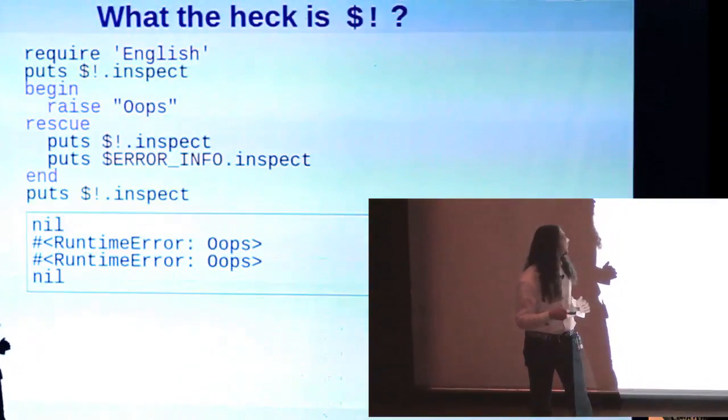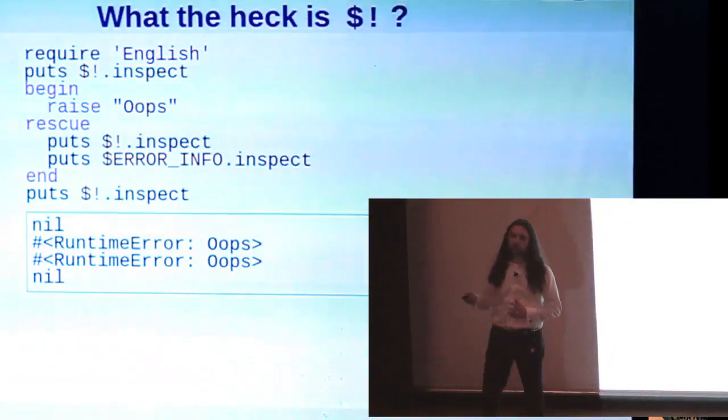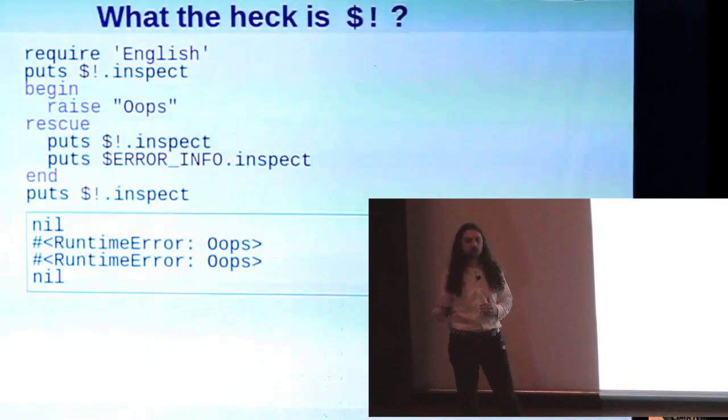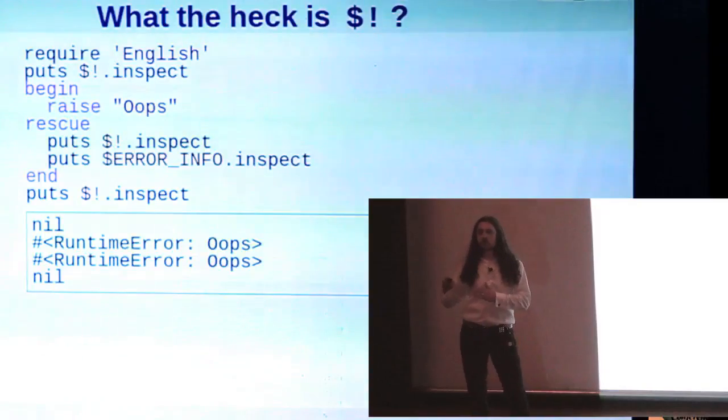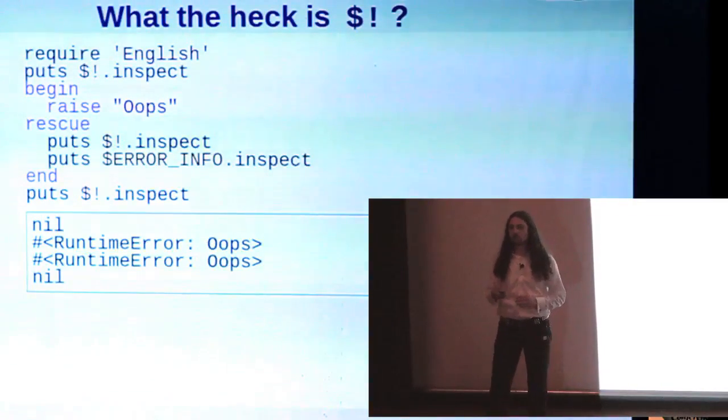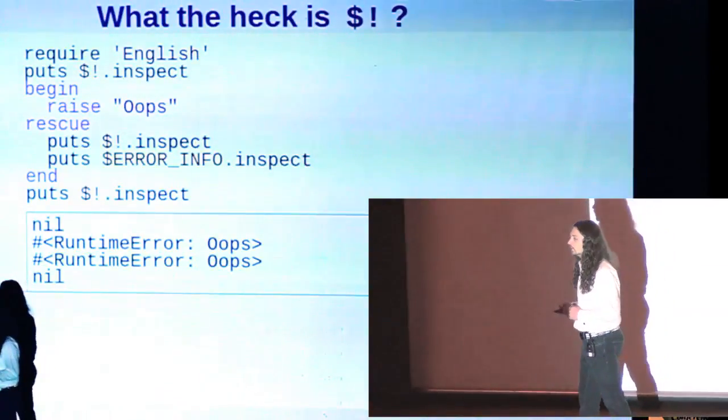Here's a simple example of using it. What this demonstrates is simply that before an exception is raised, that variable is nil. While it's being handled, while it's being rescued, that variable is set to the current exception, and then once it's been handled, the variable is once again nil.